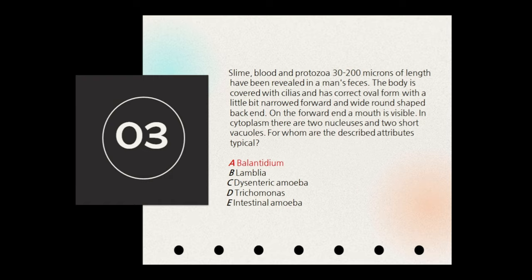The third question: slime and blood protozoa 30–200 microns in length have been revealed in a man's feces. The body is covered with cilia and has an oval form with a narrowed forward end and wide round-shaped back end. On the forward end a mouth is visible. In the cytoplasm there are two nuclei and two short vacuoles. All these morphological features are typical for Balantidium coli.